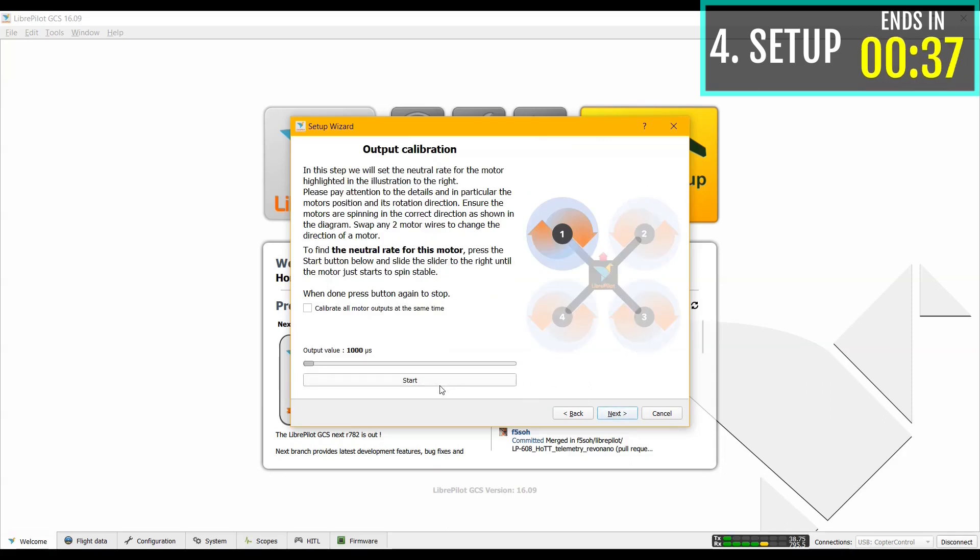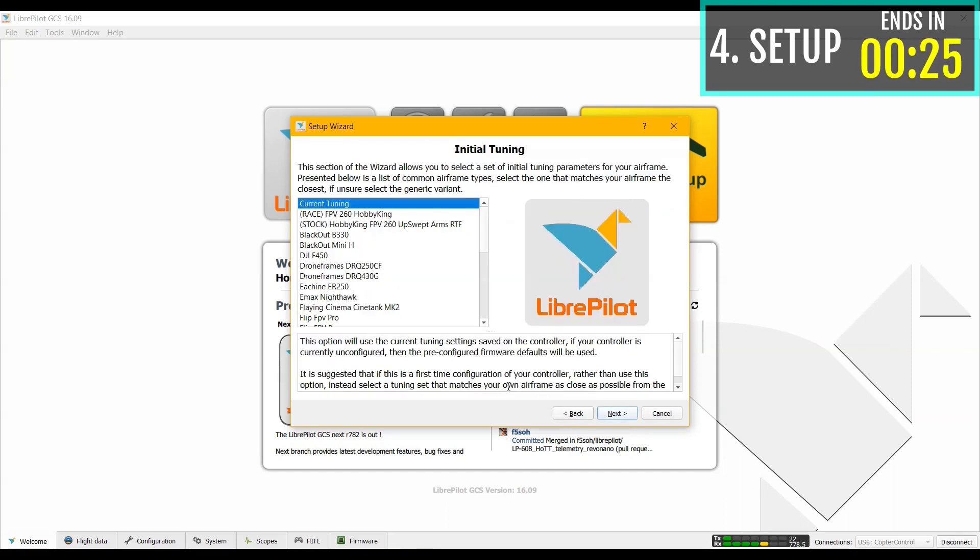Here we are calibrating our motors. Click start. And drag the bar till your motor 1 starts spinning. Make sure your motor 1 is spinning in this direction. Then click stop. Do the same for all the other three motors.